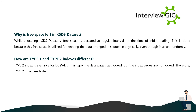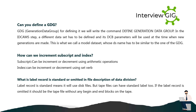How are Type 1 and Type 2 indexes different? Type 2 index is available from DB2 V4. In this type, data pages get locked but index pages are not locked; therefore Type 2 indexes are faster. Can you define a GDG? GDG stands for Generation Data Group. To define it, we write the command DEFINE GENERATION DATA GROUP in the IDCAMS step. A separate model data set must be defined whose DCB parameters will be used when new generations are made; its DSname must be similar to that of the GDG. How can we increment subscripts and indexes? A subscript can be incremented or decremented using arithmetic operations, while an index can be incremented or decremented using the SET verb. What is LABEL RECORDS IS STANDARD or OMITTED in the File Description? LABEL RECORDS IS STANDARD means it will use disk files, but tape files can also have standard labels. If LABEL RECORDS IS OMITTED, it should be a tape file without any beginning and ending labels on the tape.